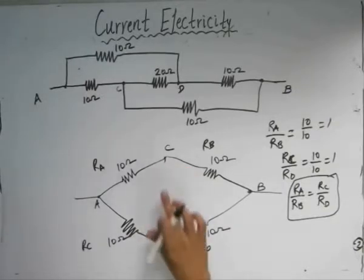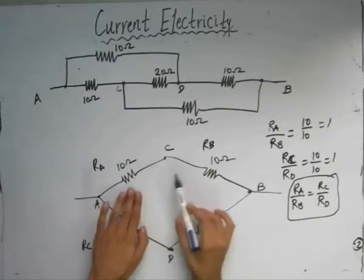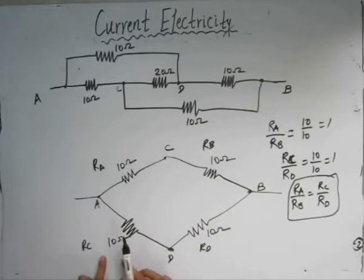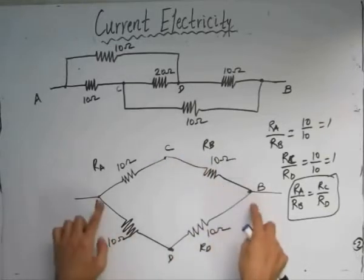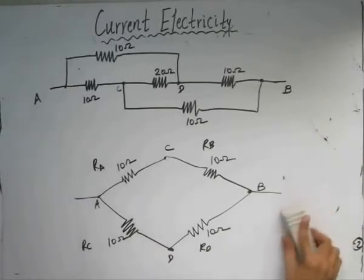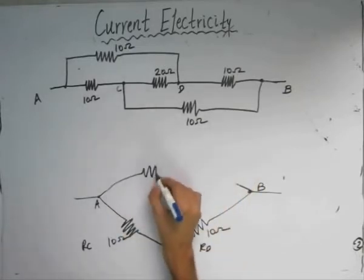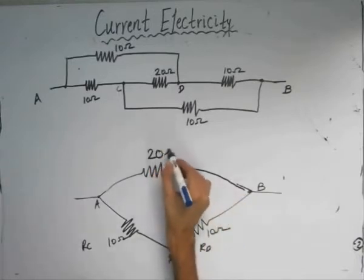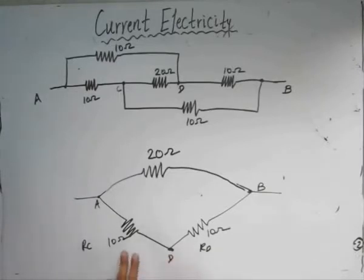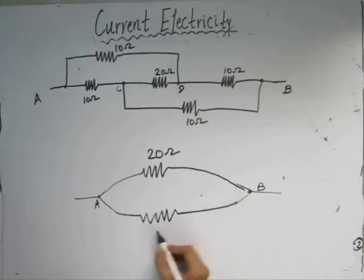This becomes an open circuit. So the equivalent combination of resistors between points A and B is the series combination of two resistors. Ra and Rb are connected in series — this can be replaced by a single resistor of value 10 plus 10, that is 20 ohms. Similarly, at the bottom branch, this 10 ohm and 10 ohm are connected in series, giving a single resistor of 10 plus 10, that is 20 ohms.